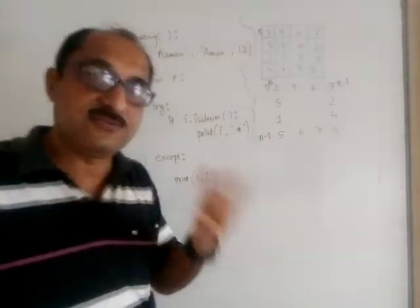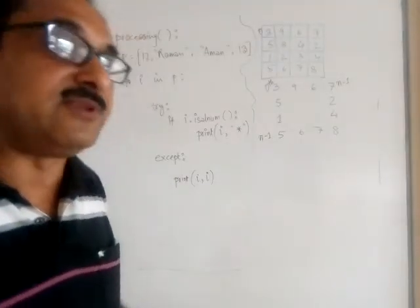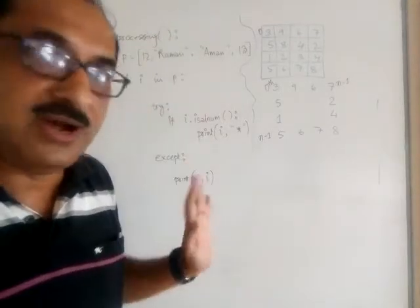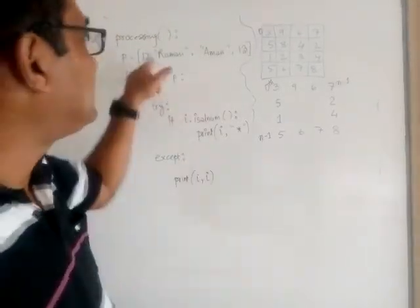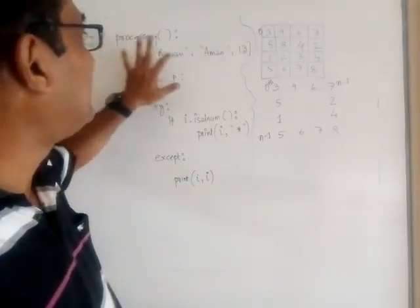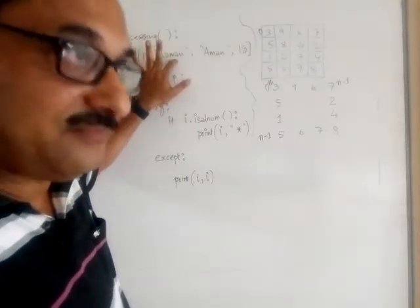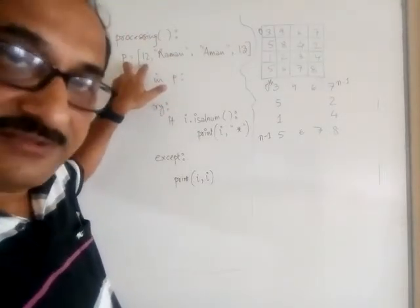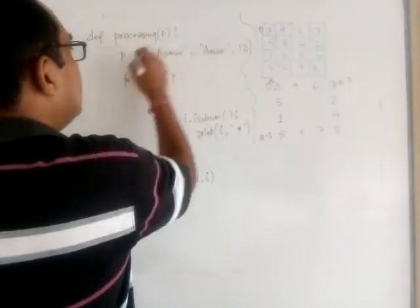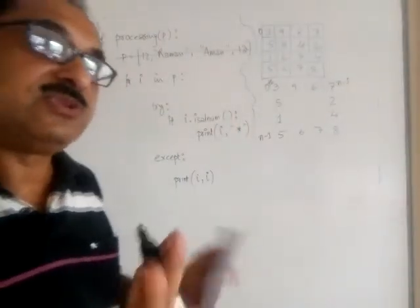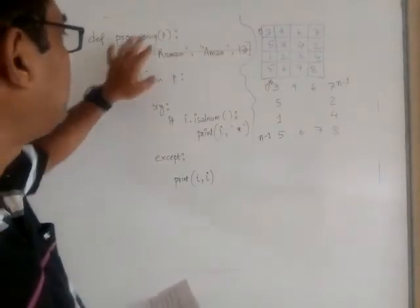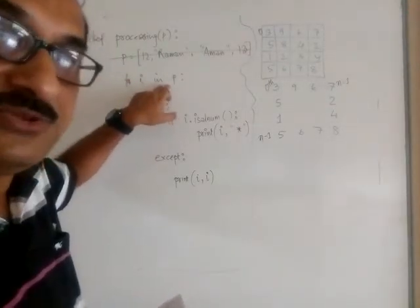I wrote a function here called 'processing'. I did not take any parameter here, because the question says 'for a given list'. You can take the list as a parameter — if you write P as a parameter, that is also okay. So both ways are fine.